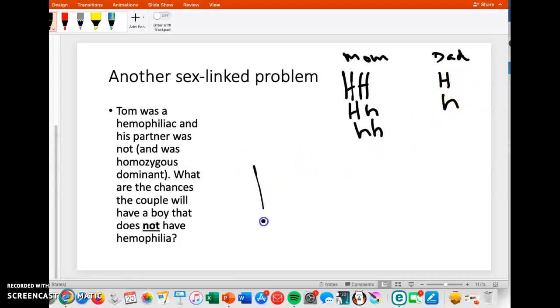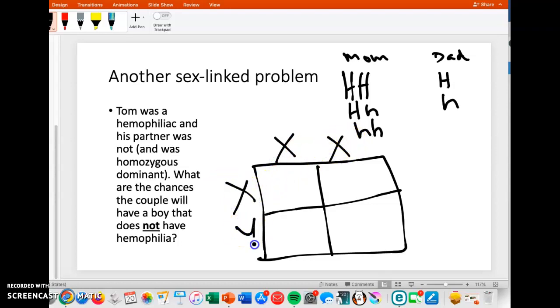So let's do our Punnett square again, and we would want to add the X and the Y this time because we want to remember that it's carried on the X chromosome. I'm going to erase this just so that we can see what's what.